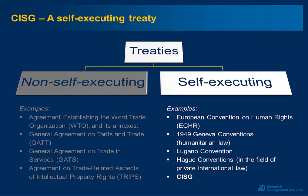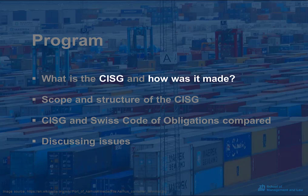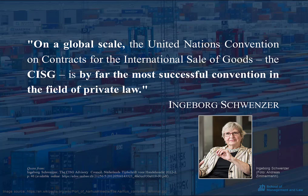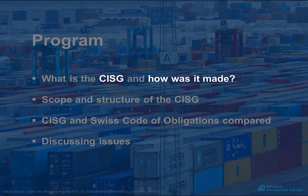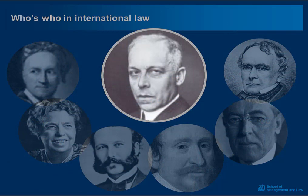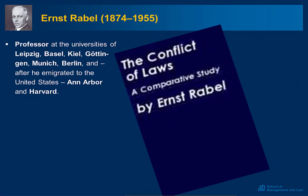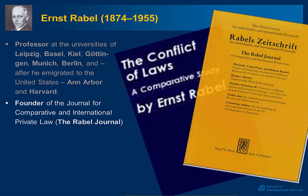I would like to say a little bit about how the CISG was created. In the early stages of the rather long process that finally led to the creation of this convention — known as the single most successful convention in the field of international commercial law — it was the pioneering work of one towering figure that proved to be groundbreaking: German law professor Ernst Rabel. Ernst Rabel was a professor at the universities of Leipzig, Basel, Kiel, Göttingen, Munich, and Berlin, and after he emigrated to the United States, at Ann Arbor and Harvard. He was also the founder of the Journal for Comparative and International Private Law, the Rabel Journal.